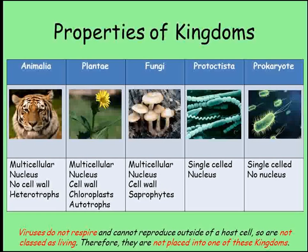Fungi are the third group of multicellular organisms. Like plants, they have cell walls, but they don't contain chlorophyll, as they get their energy from dead and decaying organisms — we describe this as feeding saprophytically. The final two groups are unicellular, meaning that each cell is a separate individual organism. Protoctista have a nucleus, whereas prokaryotes do not.